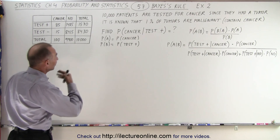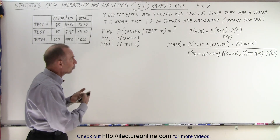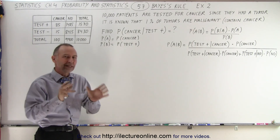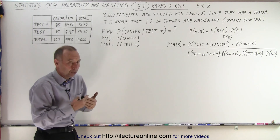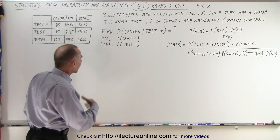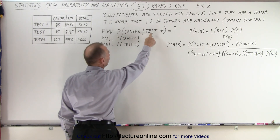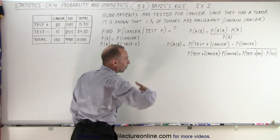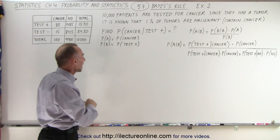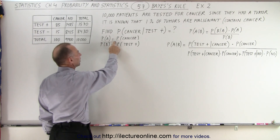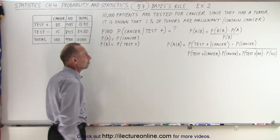Let's say that we're testing 10,000 patients who are tested for cancer because they noticed they had a tumor. It's known for this particular kind of tumor that about 1% of those tumors are malignant — in other words, they contain cancer. We want to find the probability that the patient does have cancer if they test positive. The probability of A is the probability of having cancer; the probability of event B is the probability that they test positive.